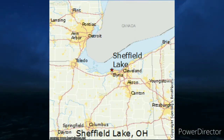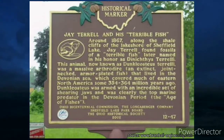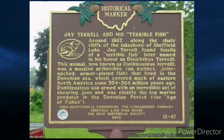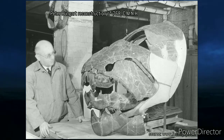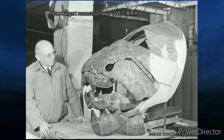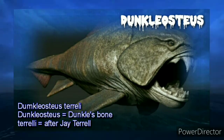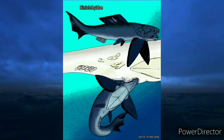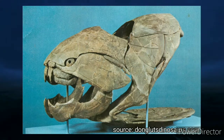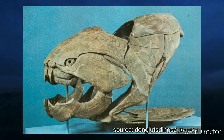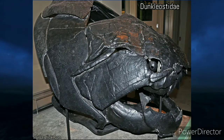The species Dunkleosteus terrelli was first discovered in 1867 along the shale cliffs of Cove Beach in the town of Sheffield Lake, and was named 'terrible fish' by its discoverer, Ohio geologist J. Tarrell. Its fossil was reconstructed by paleontologist Peter Bungar at the Cleveland Museum of Natural History. The type species was originally described in 1873 as a species of Dinichthys because of its primitive jaw structure. In 2009, Anderson suggested it should be placed outside the family Dinichthyidae, and in 2010 it was placed within Duncleosteidae, an extinct family of arthrodire placoderms.